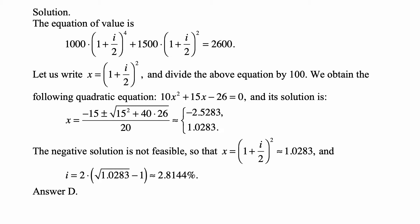That gives approximately two numbers: negative 2.5283 or 1.0283. The negative solution is not feasible, so x — which is (1 plus I over 2) squared — equals 1.0283. Therefore I equals 2 times the square root of 1.0283 minus 1, which is approximately 2.8144%, which is answer D.